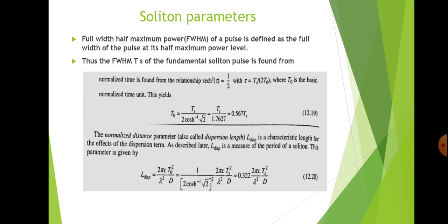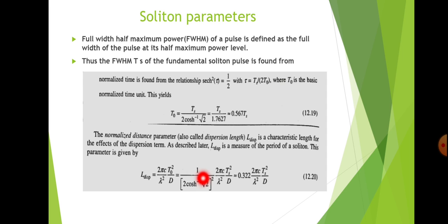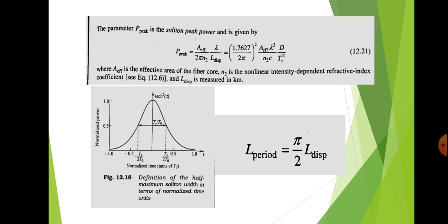The normalized distance parameter, also called the dispersion length LD, is a characteristic length for the dispersion term. It is given by: LD = 2πc · t0² / (λ² · D), where D is the dispersion, λ is the wavelength, and c is the velocity of light. Substituting for t0 gives: LD = 0.322 · (2πc/λ²) · (ts²/D). These equations are useful for solving problems.